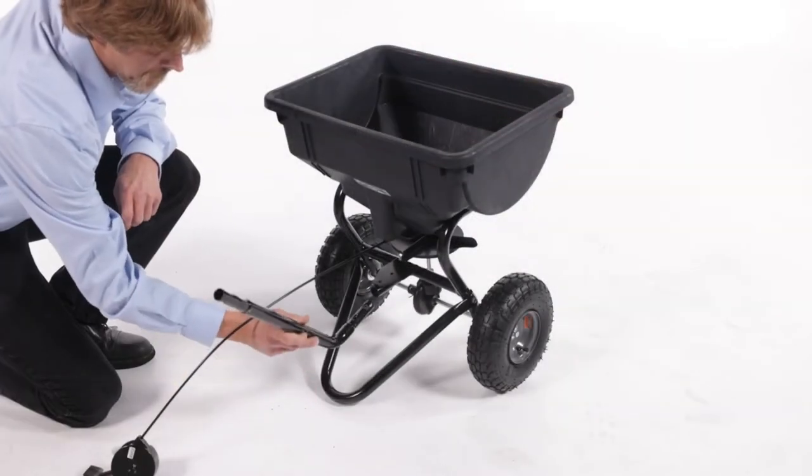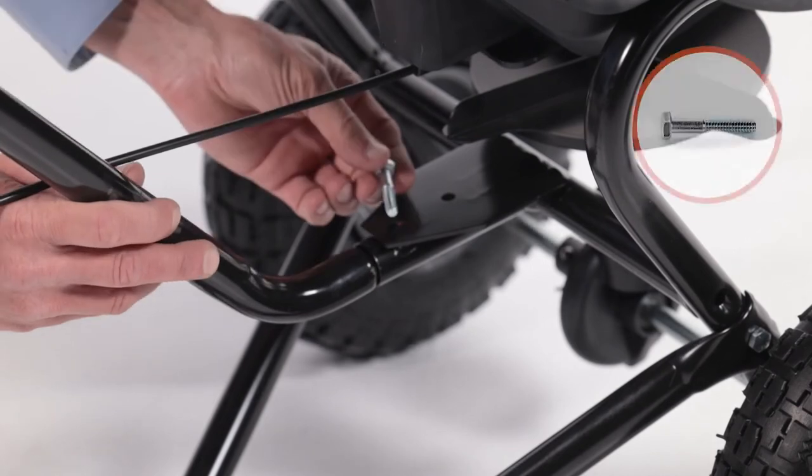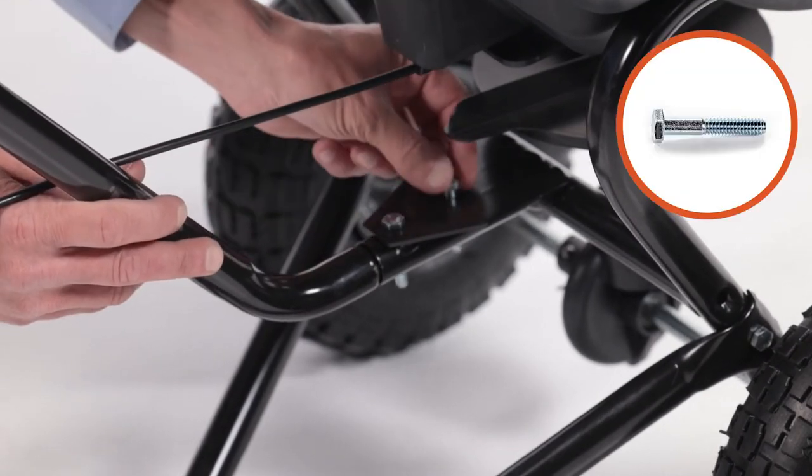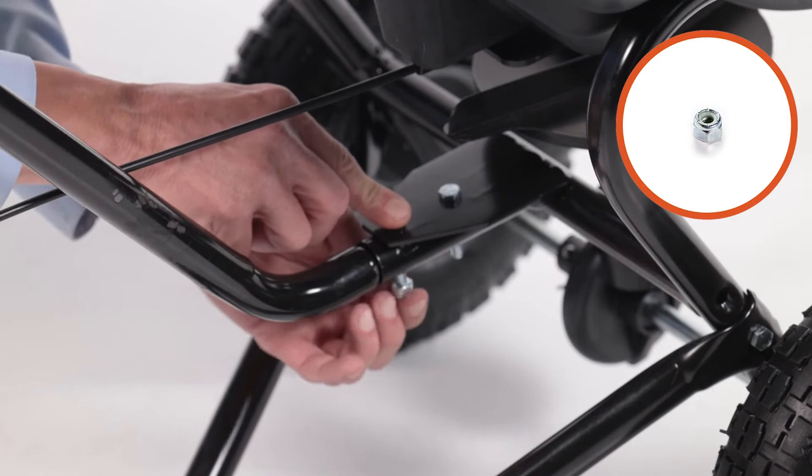Now, align the lower handle tube, Part U, and fully secure it with two 1⁄4-inch by 1 1⁄2-inch bolts, Part C, and two 1⁄4-inch nylock nuts, Part F.